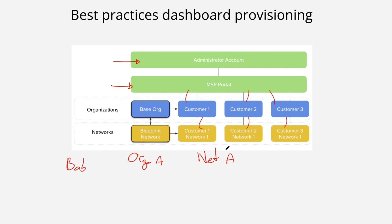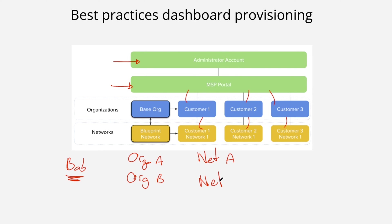Now, how can you have another organization under the same user? The best way to do it is to go back to the organization, create a new organization using the same username and password — the one used for Bob — and call it Organization B, with Network B inside of it.